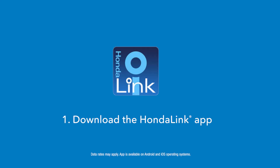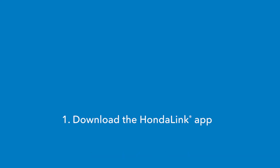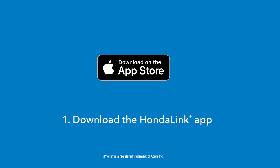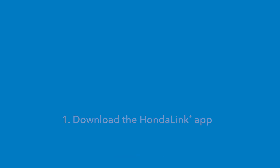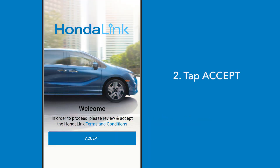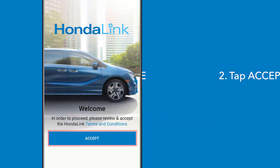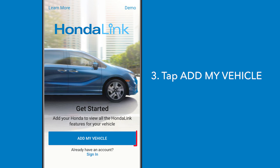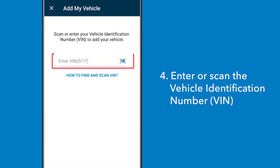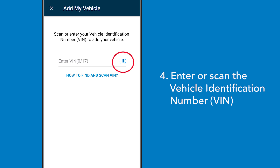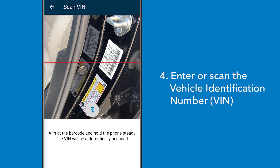The first thing you'll need to do is download the app to your smartphone. iPhone users will go to the Apple App Store and Android users to the Google Play Store. Open the app and accept the HondaLink terms and conditions, then select 'Add My Vehicle.' Now input the vehicle identification number, or touch the scan icon and scan the